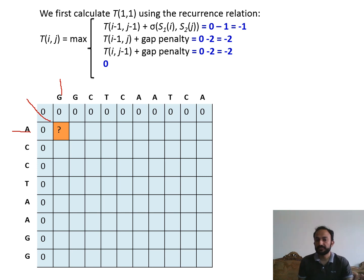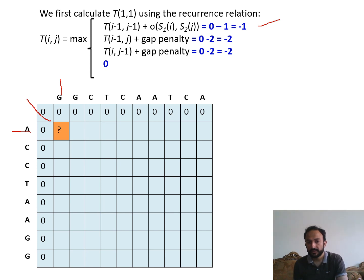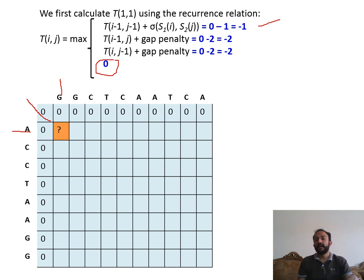For the first cell, A and G are not similar — this is a mismatch — so diagonally we get zero plus minus one equals minus one. Horizontally we get zero plus minus two equals minus two (gap penalty). Vertically we also get zero plus minus two equals minus two. The fourth possibility, unique to Smith-Waterman, is zero. The four possibilities are minus one, minus two, minus two, and zero. The maximum is zero, so we insert zero.